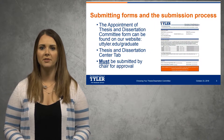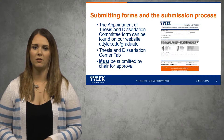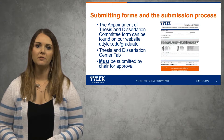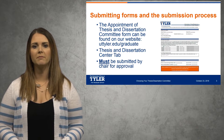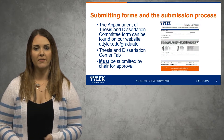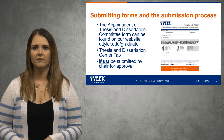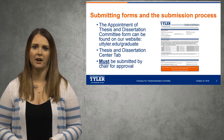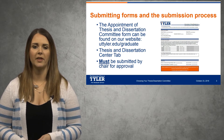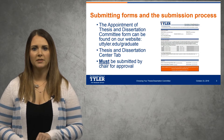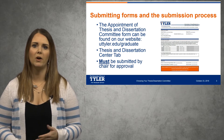Now, submitting forms and the submission process for thesis and dissertation. This form on the slide is a glimpse of what the appointment form looks like. Once you've decided who would be best on your committee, this appointment form has to be filled out so that we can see who's on your committee and approve that. It can be found on our website under the thesis dissertation center tab, and it must be submitted by the chair for approval. All thesis and dissertation forms have to be submitted by your chair. You'll briefly tell us your topic and list your committee members. If you have a visiting member, there's a box to describe what they would bring to your committee.